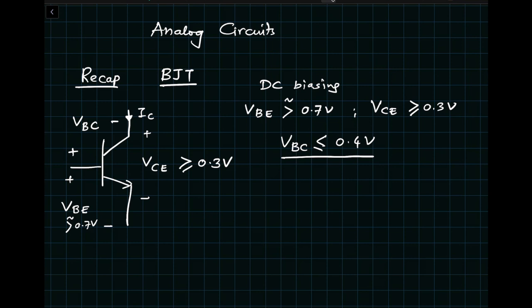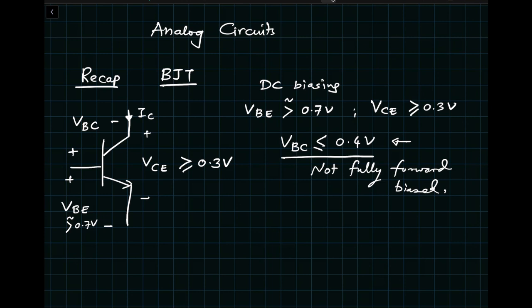The key point is that the base-to-emitter junction is forward biased and carrying current. However, the base-to-collector junction is not completely forward biased — it should ideally be reverse biased, but in the worst case it can be slightly forward biased. Until that condition is met, we can call the transistor to be in the forward active region.